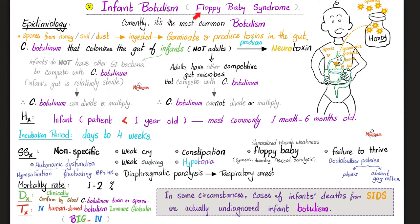Number two: infant botulism, also known as floppy baby syndrome. Currently it is more common than classic foodborne botulism. Botulism spores from honey, soil, or dust make their way into the baby's gut via ingestion. When circumstances become convenient in the gut, the spores germinate and produce the nasty botulinum neurotoxin in the gut. This is more problematic in infants than in adults because the infant gut is relatively sterile — there are no other bacteria competing, so Clostridium botulinum takes the entire field and dominates. In adults, it is overwhelmed by the abundant microbiota, since adults have been exposed to the environment for a longer period of time.